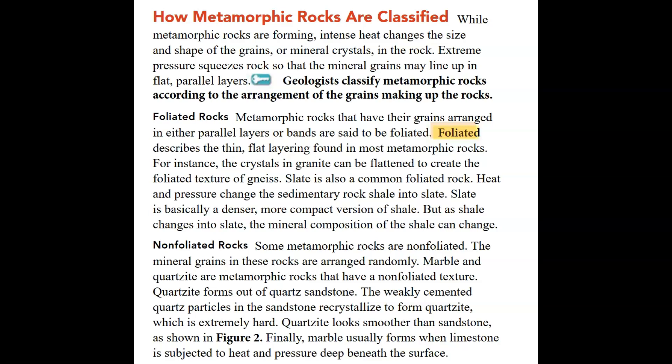While metamorphic rocks are forming, intense heat changes the size and shape of the grains or mineral crystals in the rock. Extreme pressure squeezes rock so that the mineral grains may line up in flat, parallel layers. Geologists classify metamorphic rocks according to the arrangement of the grains. Metamorphic rocks with grains arranged in parallel layers or bands are said to be foliated. For instance, the crystals in granite can be flattened to create the foliated texture of gneiss. Heat and pressure also change shale into slate, which is a denser, more compact version of shale, and its mineral composition can change.